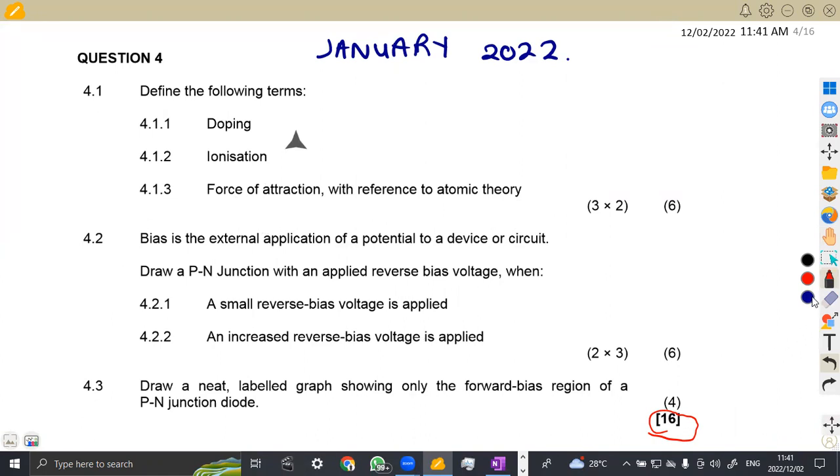The first part of the paper, we are given on 4.1. Define the following terms. So we are given the terms where we are supposed to define. I'm just going to give you exactly how the department wants you to answer these questions. 4.1.1, that is doping.